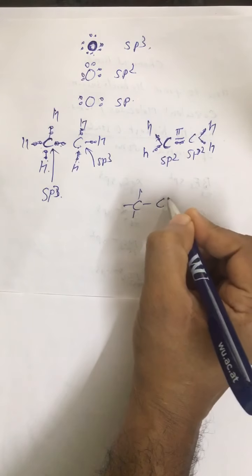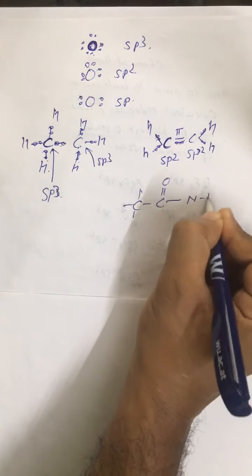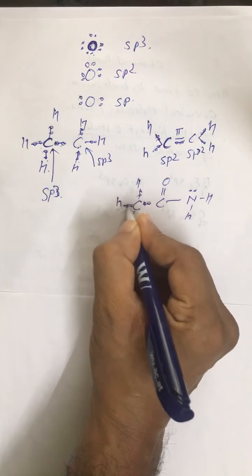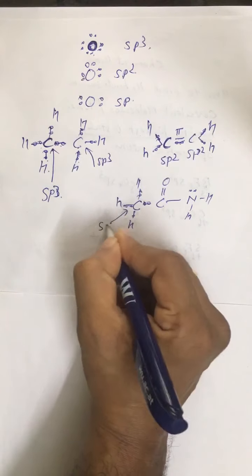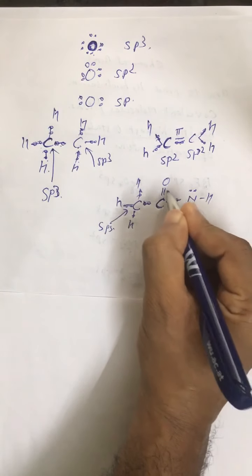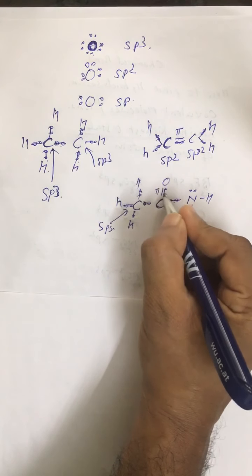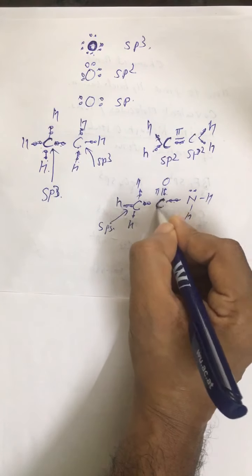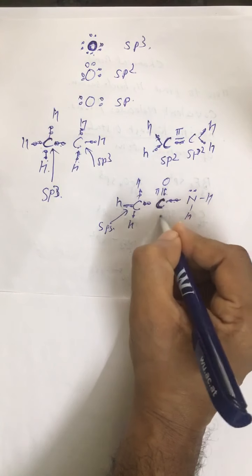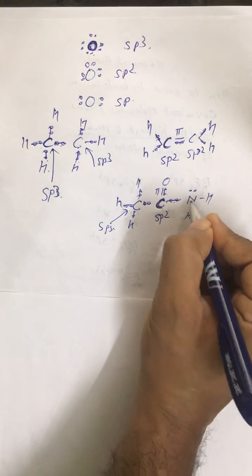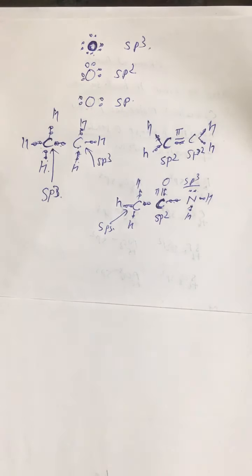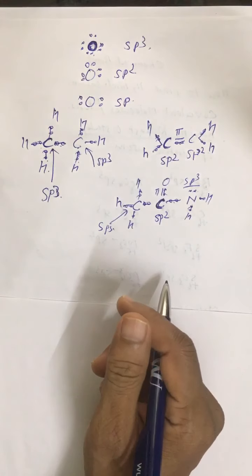Look at CH₃CONH₂. The first carbon is singly bonded, surrounded by four electron pairs — it is sp3. The second carbon is surrounded by three electron pairs (the pi bond's pi electron pair is not included), so it is sp2 hybridized. The nitrogen is surrounded by four electron pairs (including its lone pair), so it is sp3 hybridized. In organic molecules there are multiple central atoms, all undergoing hybridization.